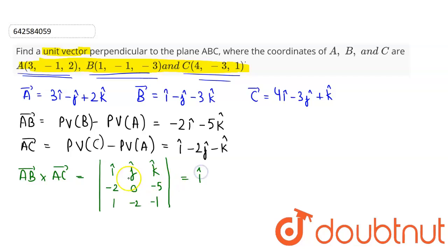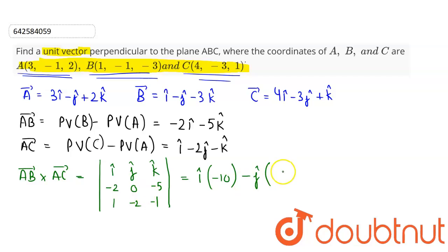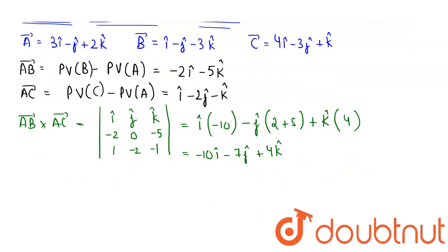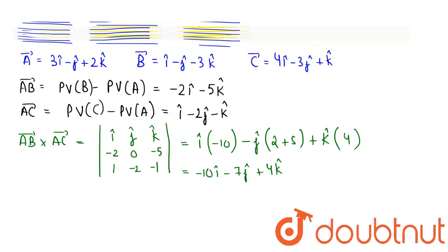Solving the determinant along the first row: i cap component is 0 times minus 1 minus minus 2 times minus 5, giving minus 10. The j cap component gives minus 7. The k cap component gives 4. So the result is minus 10i cap minus 7j cap plus 4k cap, which is perpendicular to the plane.